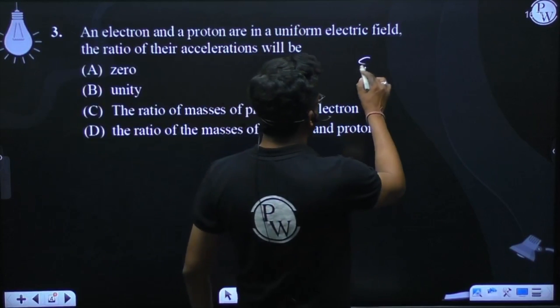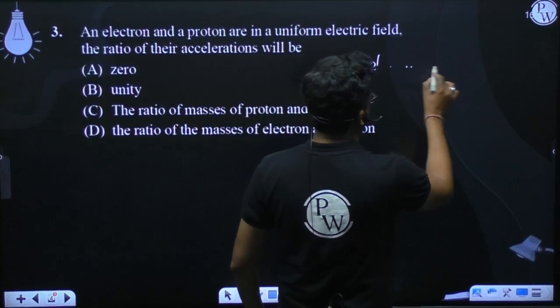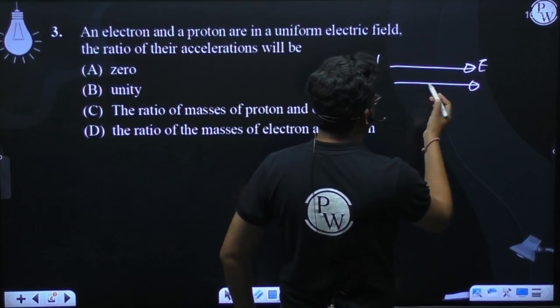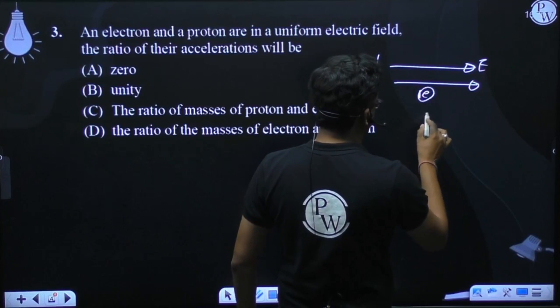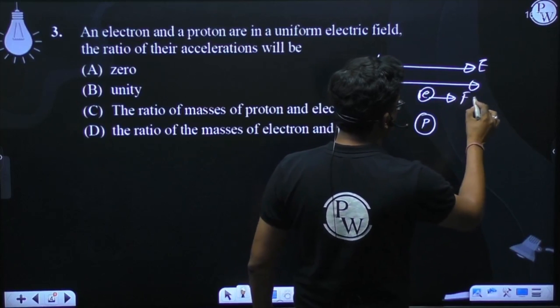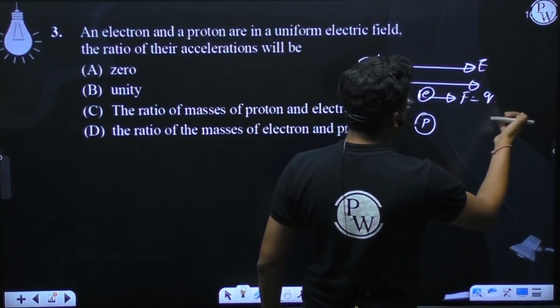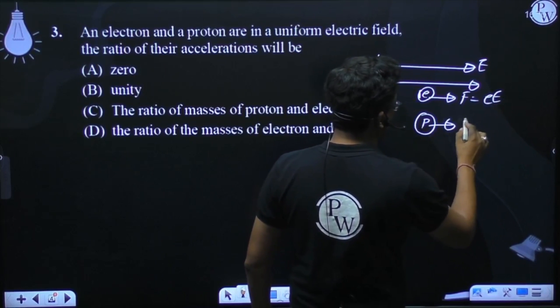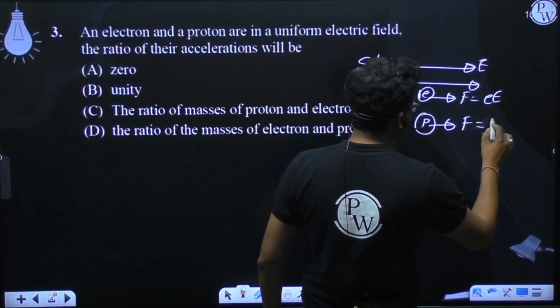Now see, say the electric field is directed in this direction, and there is an electron and a proton. They will experience force F equals eE, and this will also experience, magnitude wise, pE.